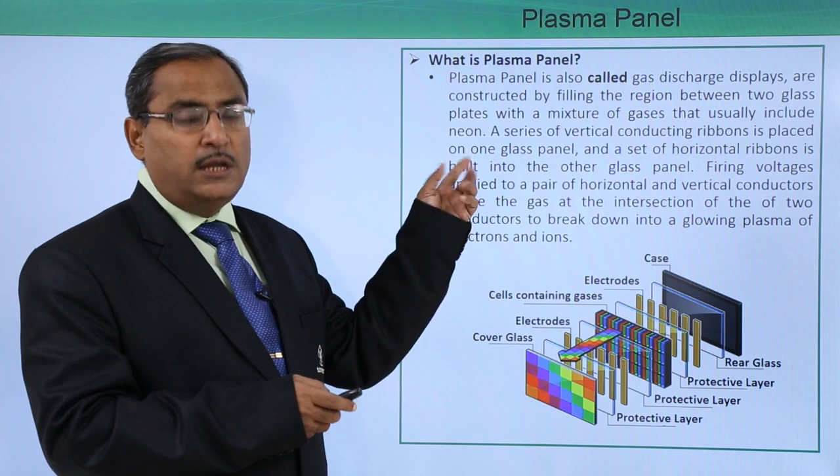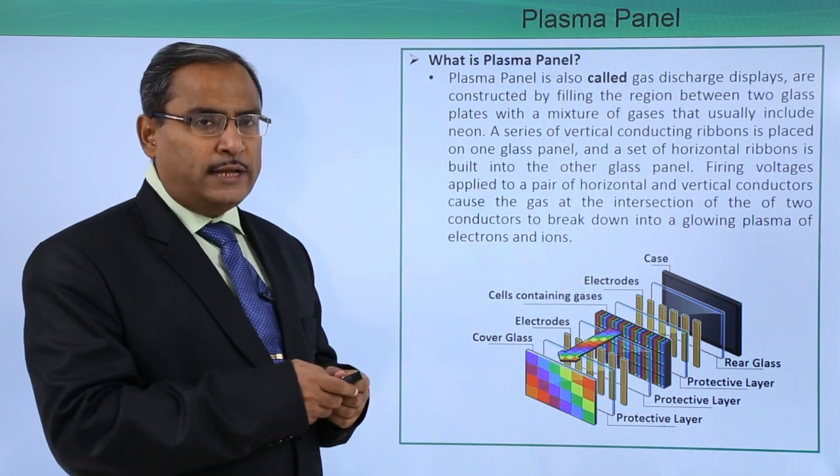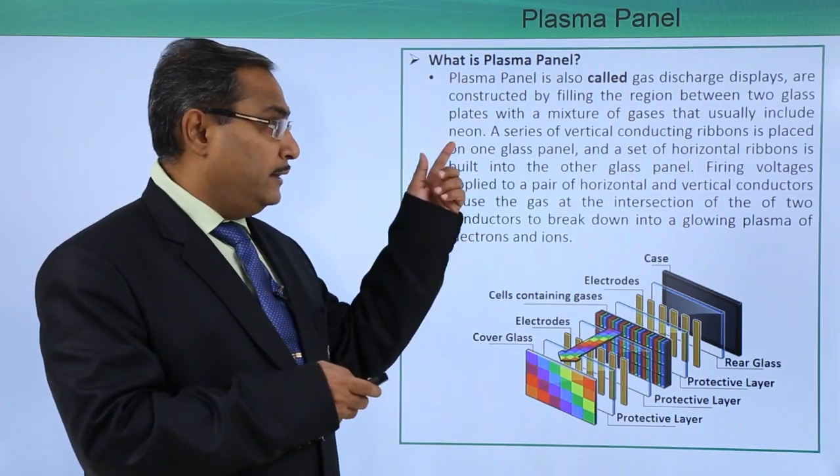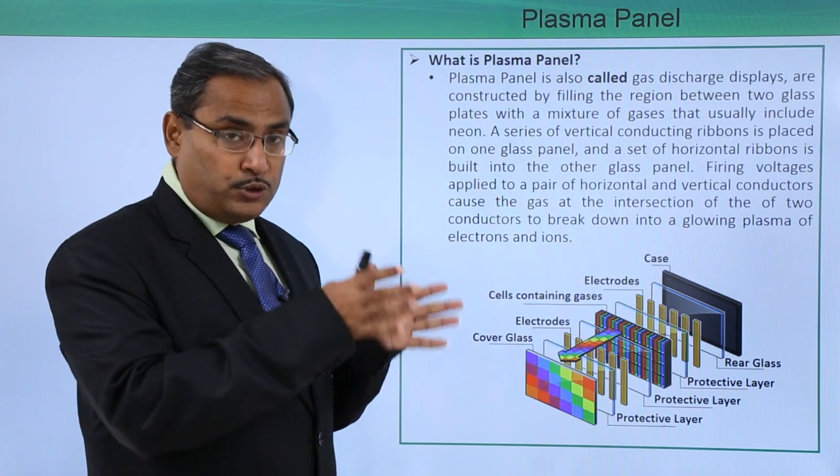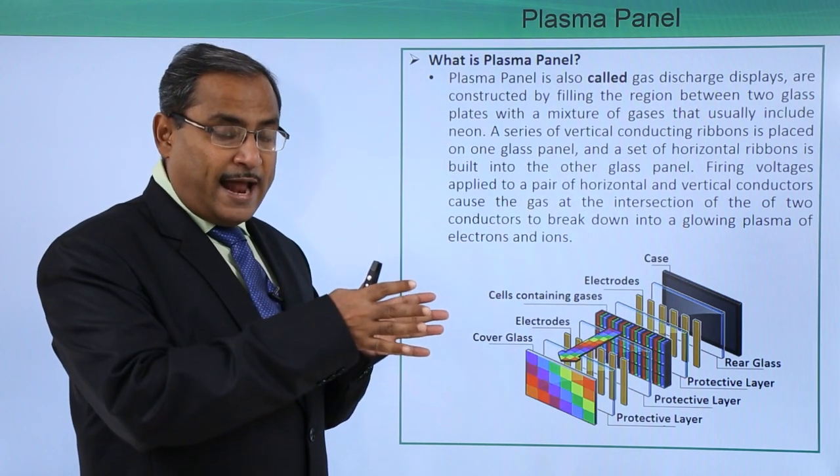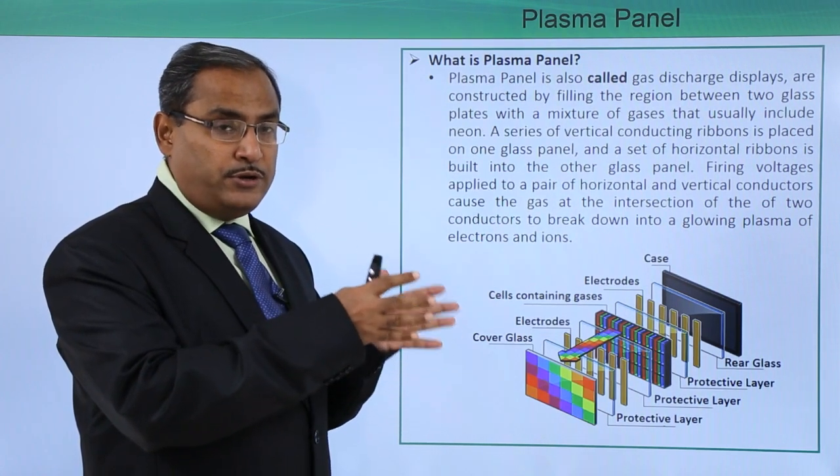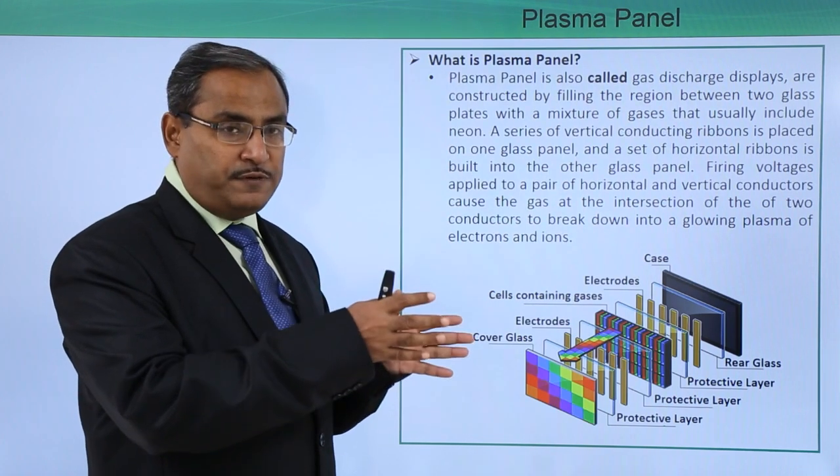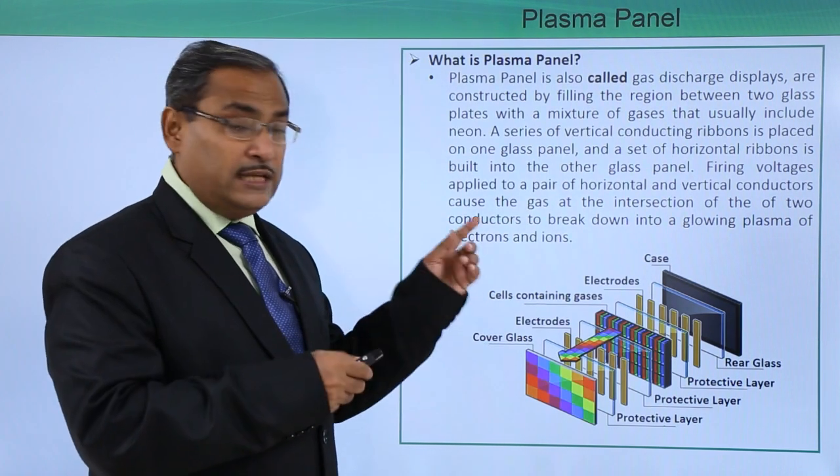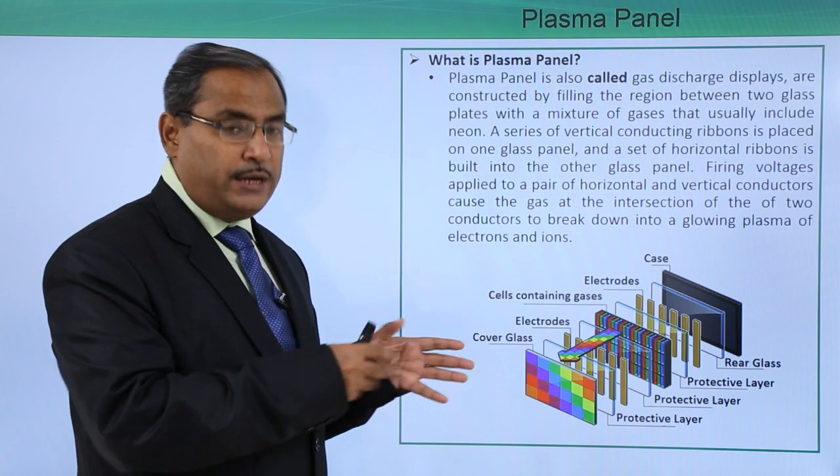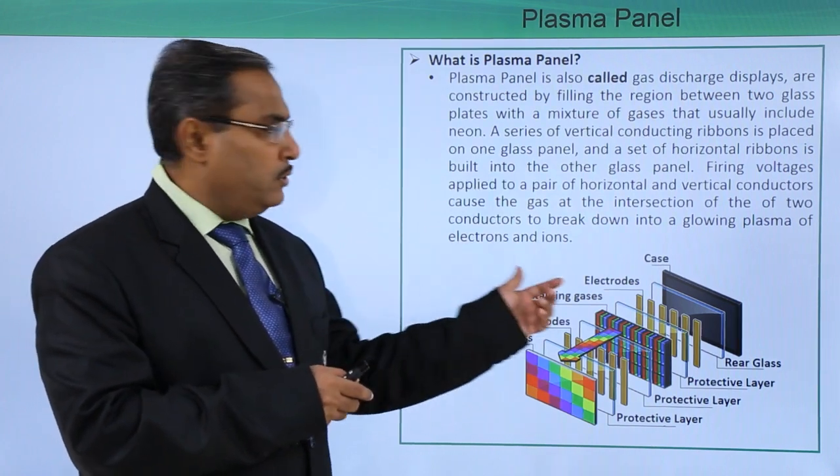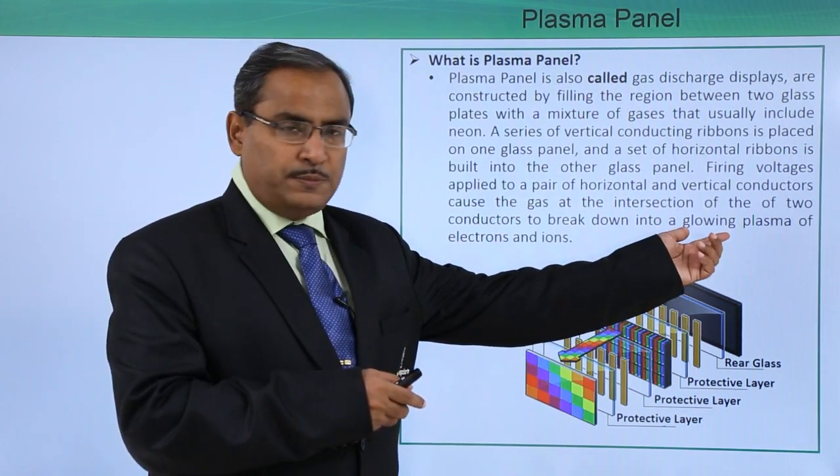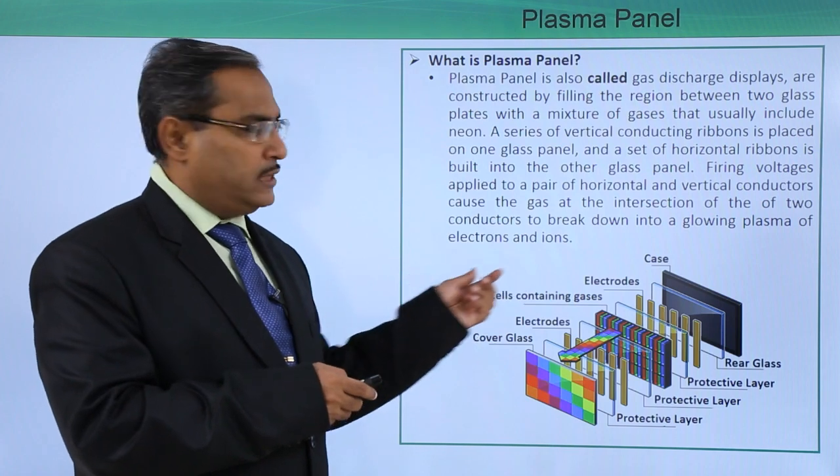This particular mixture of gases will also have neon as one of the gases. This gas will be put in between two electrodes and due to the voltage difference between these two electrodes, this particular gas will be broken down into the respective glowing plasma of electrons and ions.